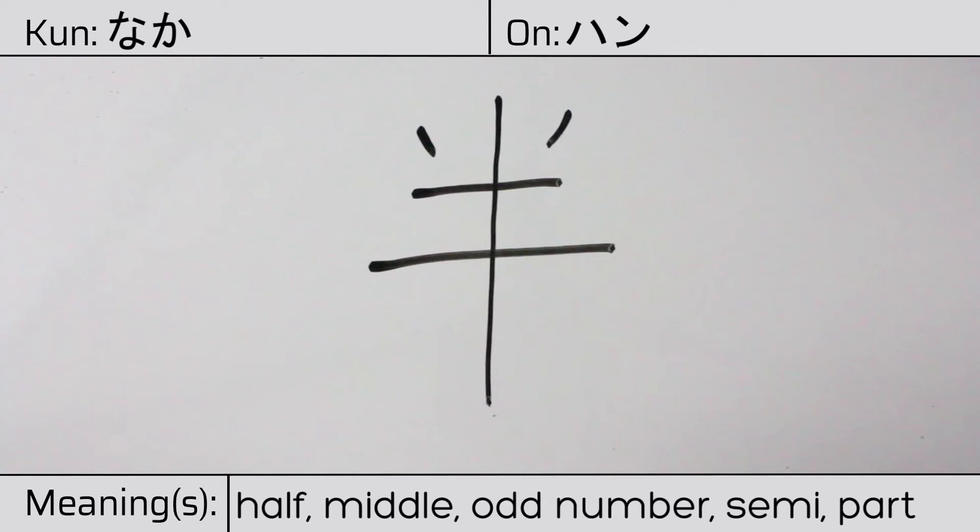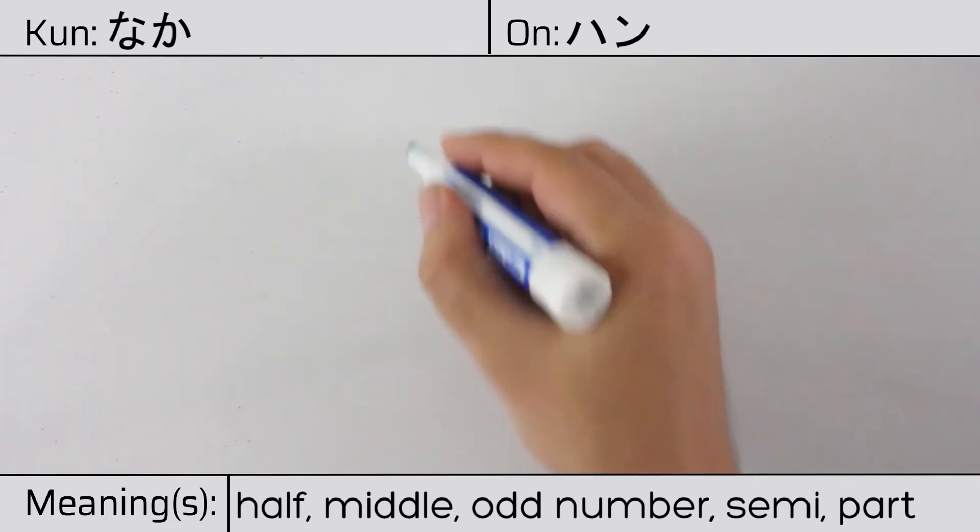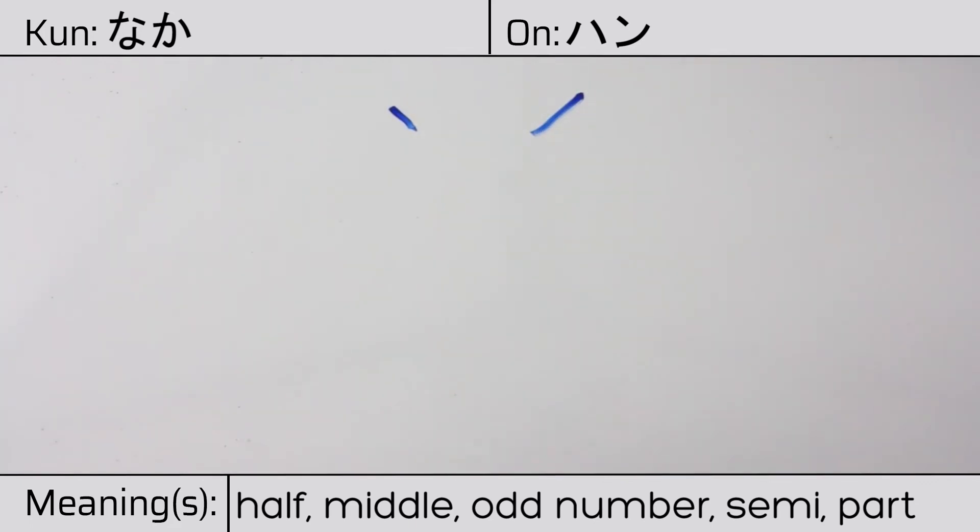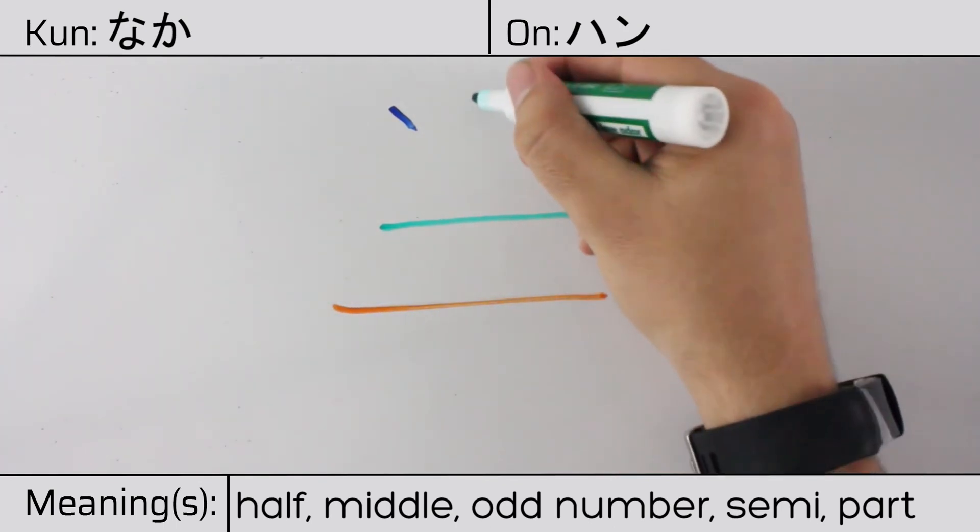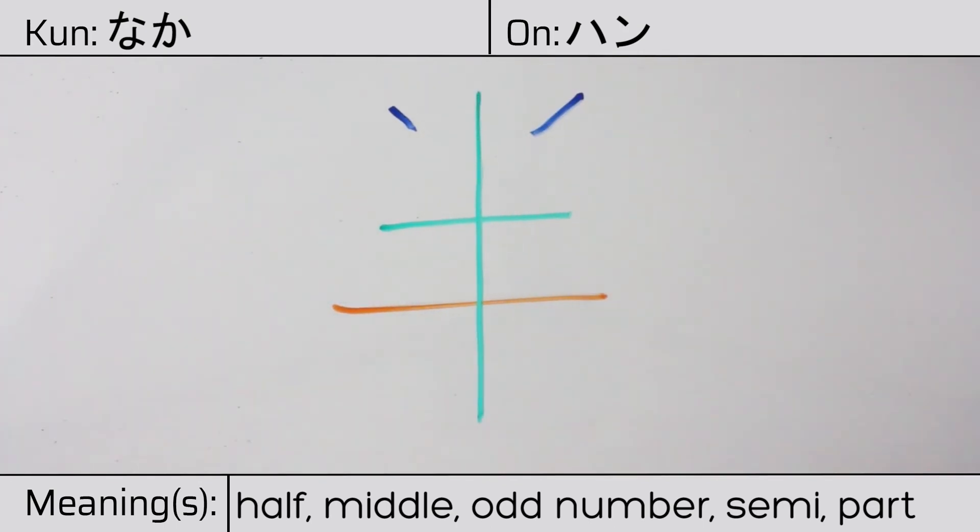This character is made up of the following radicals or parts: two ten, or dots, at the top, followed by ten, or complete, jiu, and ichi.